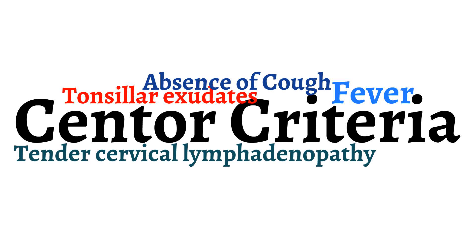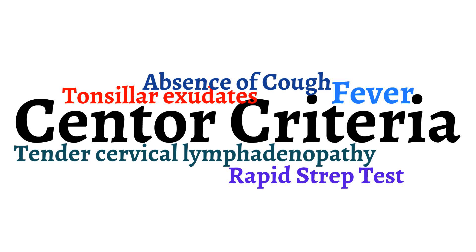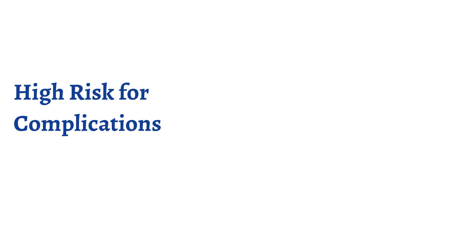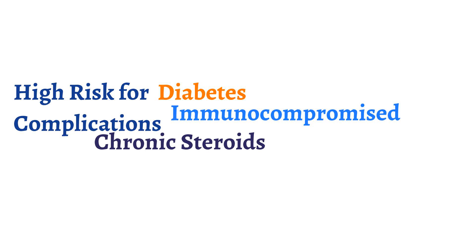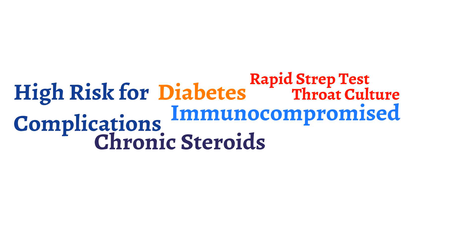Those who meet zero to two criteria are unlikely to have group A strep pharyngitis. For patients who have three or more criteria, these patients should undergo rapid antigen detection tests. If the rapid antigen detection test is negative, they are unlikely to have group A strep, as these rapid tests have a high negative predictive value. For patients with higher risk for severe infections, such as those with diabetes or who are immunocompromised, or even those taking chronic steroids, a throat culture may be obtained in addition to a rapid antigen test on the first visit.